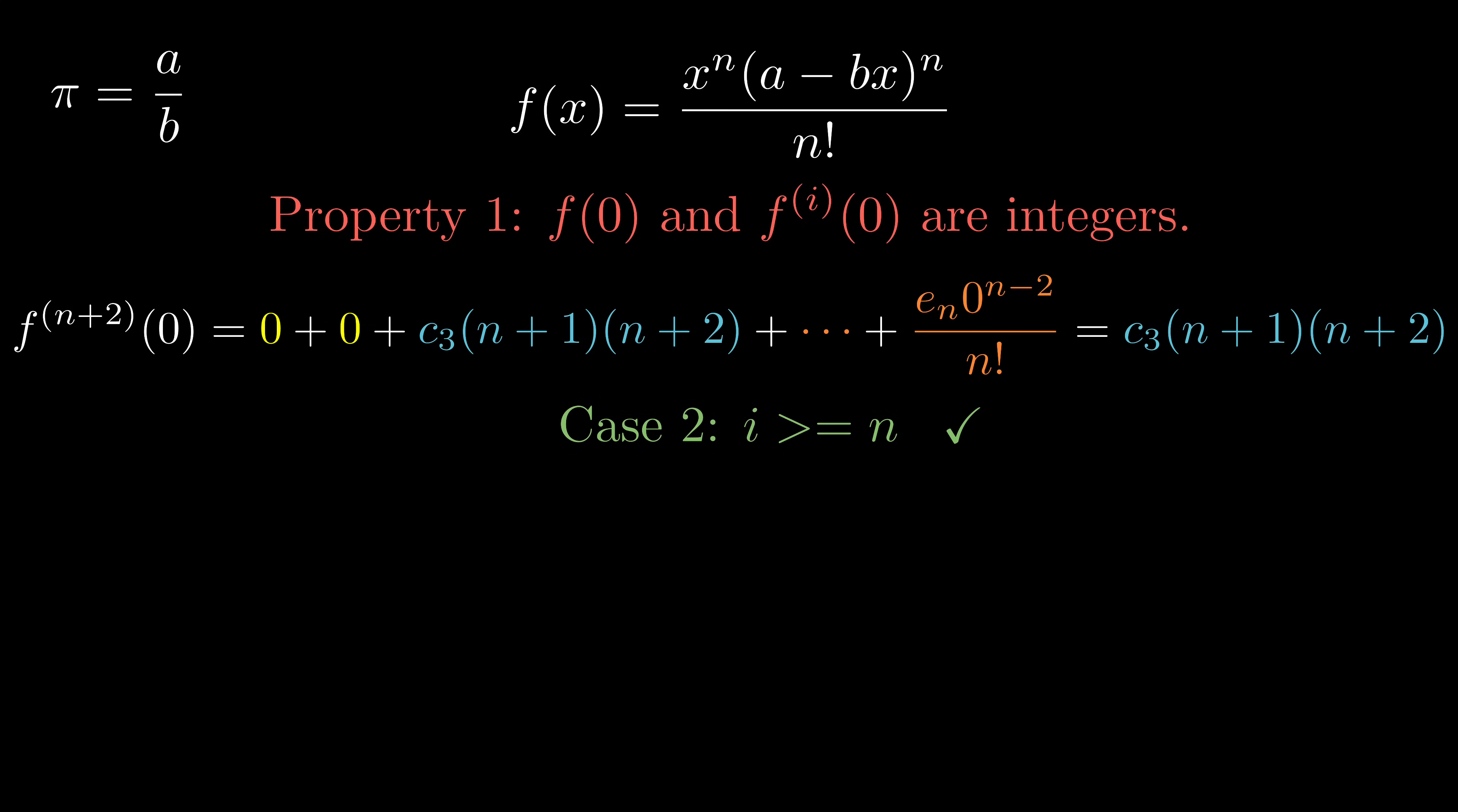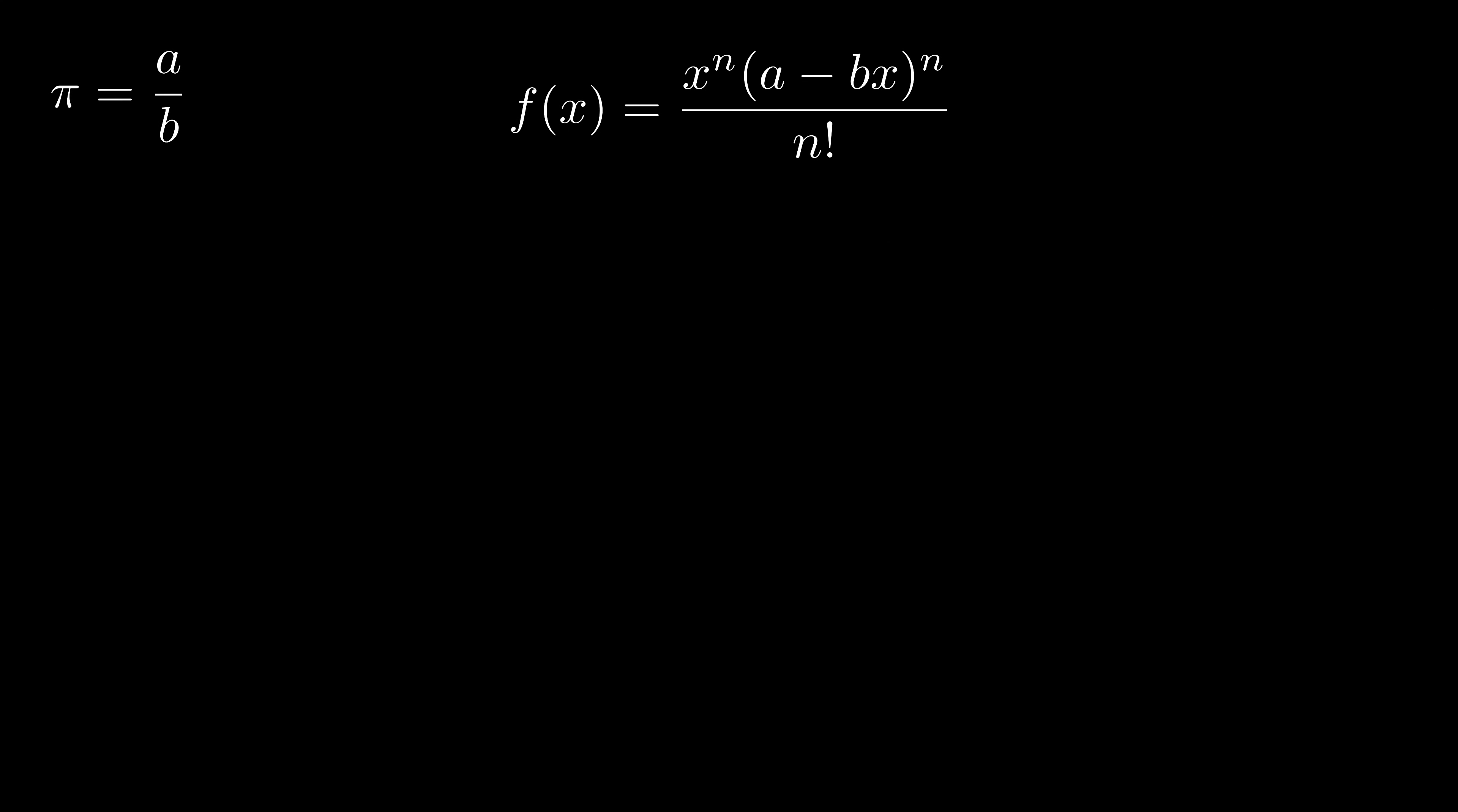Combining these two cases, our property 1 is fully justified. If you watched my pancake approximation of pi video, this function does look like a pancake function between zero and pi.